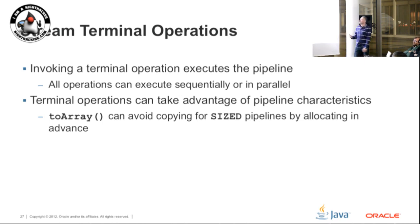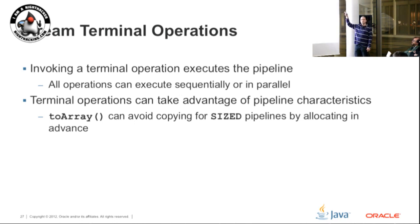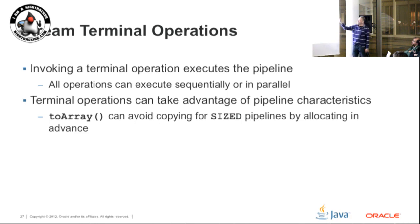Terminal operations are basically when the pipeline gets executed. The intermediate operations and source just construct what's going to happen. When you call the terminal operation, that's when everything actually happens, and the underlying library code will fuse operations together where possible so you only have one pass on the data. For example, if we know the stream is sized and you're using toArray() as your terminal operation, we can pre-allocate an array of the right size, enabling improvements in efficiency.